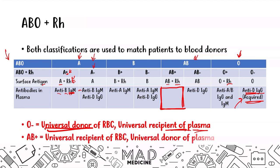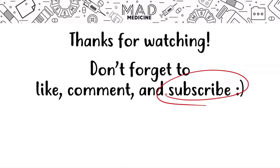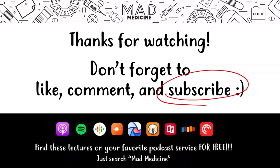The AB positive subgroup is the universal recipient — they can receive all A, B, AB, and O blood groups. They are also the universal donor of plasma because they have no antibodies in the plasma, meaning there are no antibodies that will affect patients who receive their plasma. That's pretty much all you need to know for Step One when it comes to blood groups. Don't forget to like, comment, and subscribe. You can also find these lectures on your favorite podcast service — just search Mad Medicine.